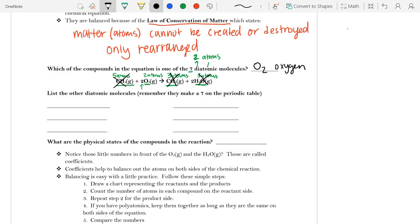And so if we want to list the other diatomic molecules, and there are seven of them, we use the word HOFBrINCl to help us remember what they are.